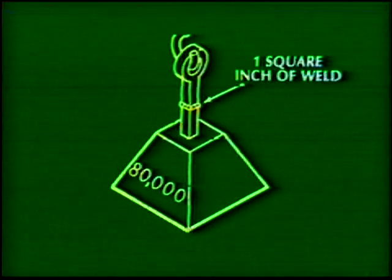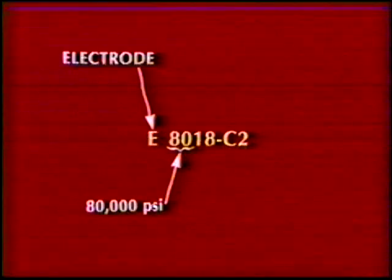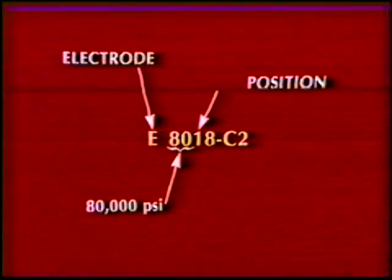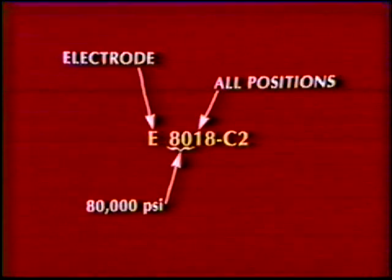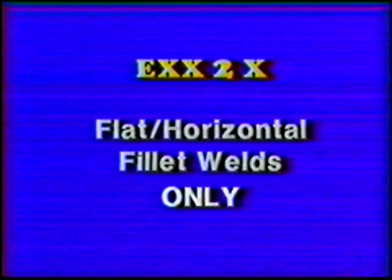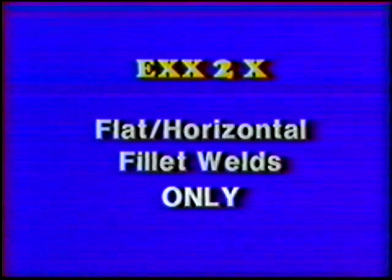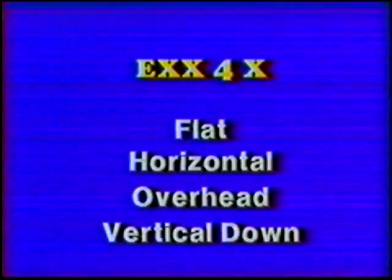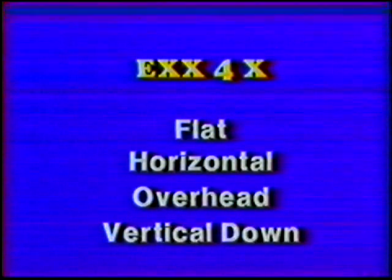This means that one square inch of the weld can hold a load of at least 80,000 pounds. The next digit designates the welding position. A number one is used to indicate that the electrode may be used in all welding positions — flat, horizontal, vertical, and overhead. If the number is a two, the electrode is limited to flat and horizontal fillet welding positions. And if the number is a four, the electrode may be used in the flat, horizontal, overhead, and vertical down positions.